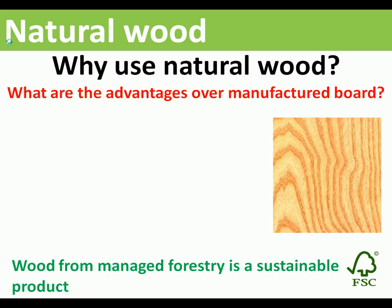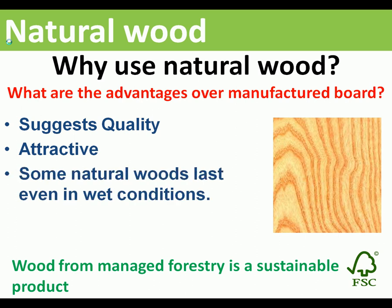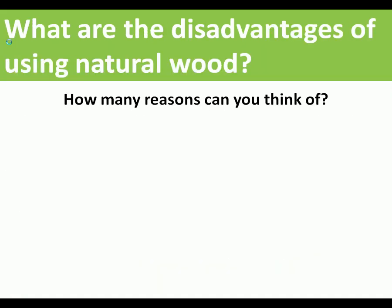Why use natural wood? If you're making a product like a table, the advantages of natural wood are: it suggests quality — most high-quality furniture is made from natural wood, not manufactured boards. It's attractive and the grain looks nice. Some natural woods last well even in wet conditions — oak, for example, will last well outside. The end product is strong and durable, meaning it will last a long time. Wood from managed forestry is also a sustainable product.